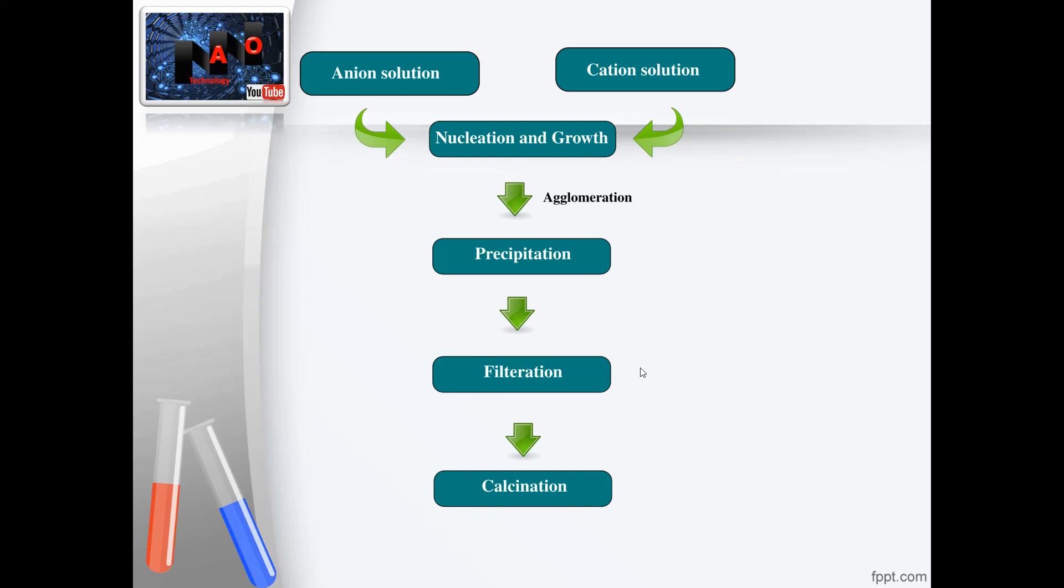This diagram shows a schematic illustration of co-precipitation method. You should prepare two solutions, an anion solution and a cation solution. After mixing these solutions, nucleation and growth will happen.